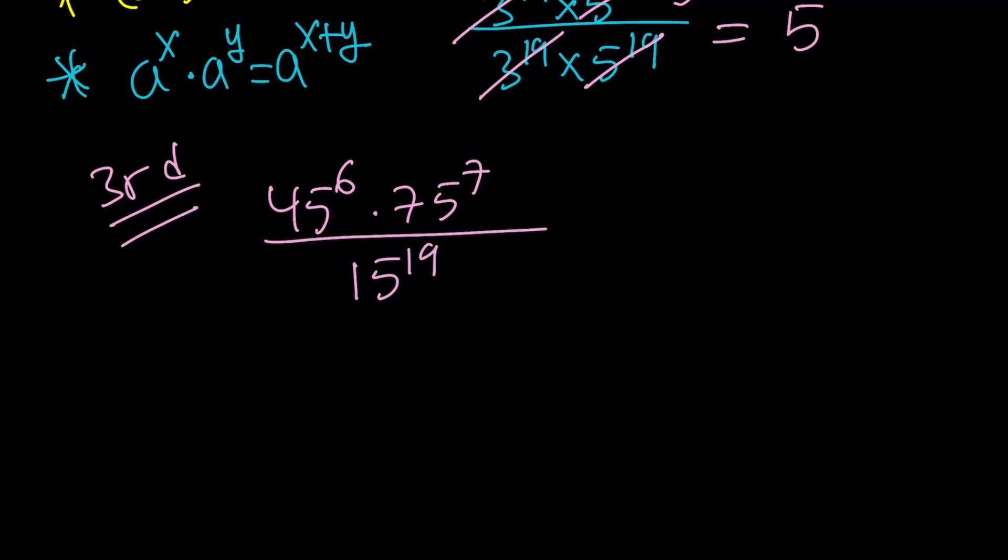That 45, 75, and 15 all have a common factor. Actually the greatest common factor in this case would be 15 itself. So let's go ahead and write 45 as 3 times 15, write 75 as 5 times 15, and just leave the 15 alone. Makes sense right? Let's do it.